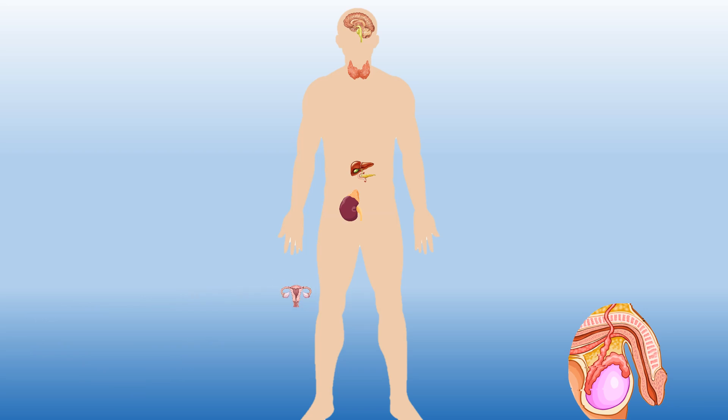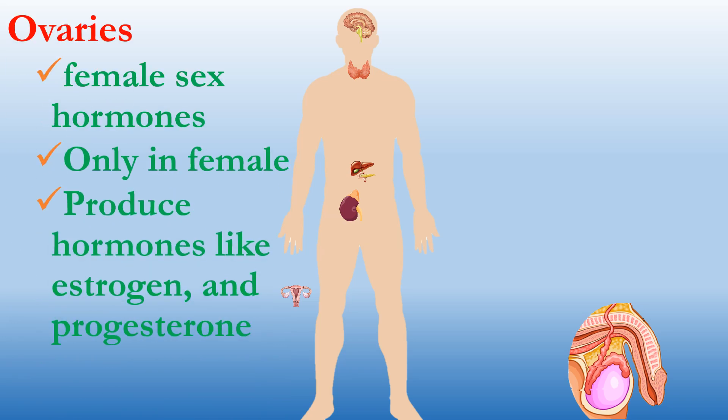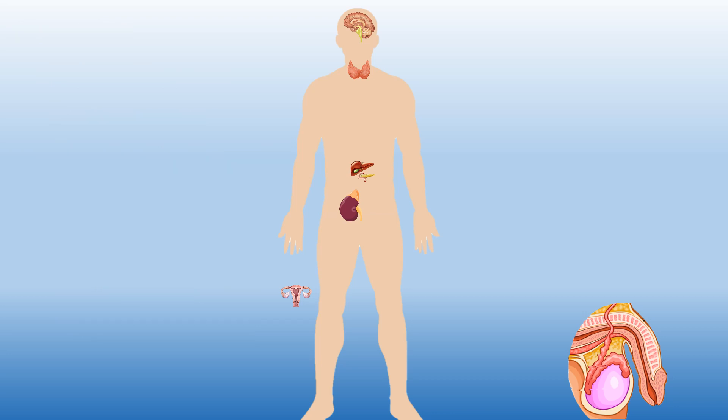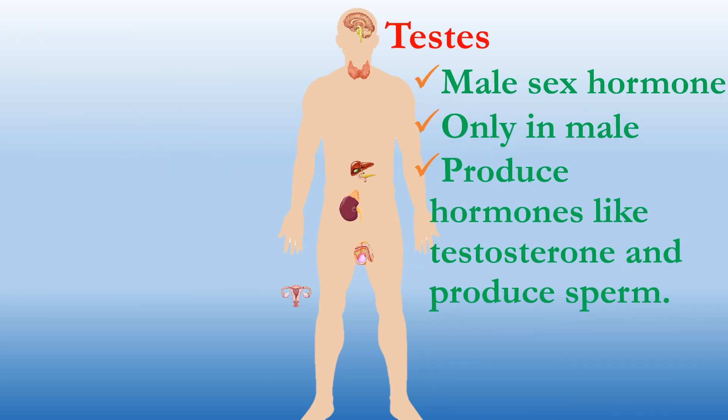Next is the female reproductive organ, the ovary. It helps to produce female sex hormones and is only present in females. It usually produces hormones like estrogen and progesterone. Next are the testes, which are the male reproductive organ. They produce male sex hormones, specifically testosterone, and their main function is to produce sperm, which is very important for the fertilization of a female egg cell. These are the main hormones produced by the endocrine glands.